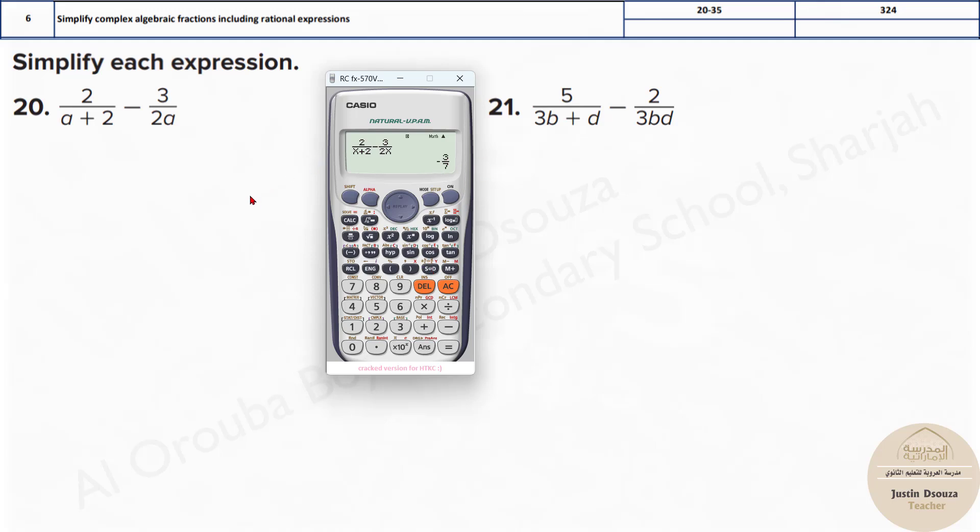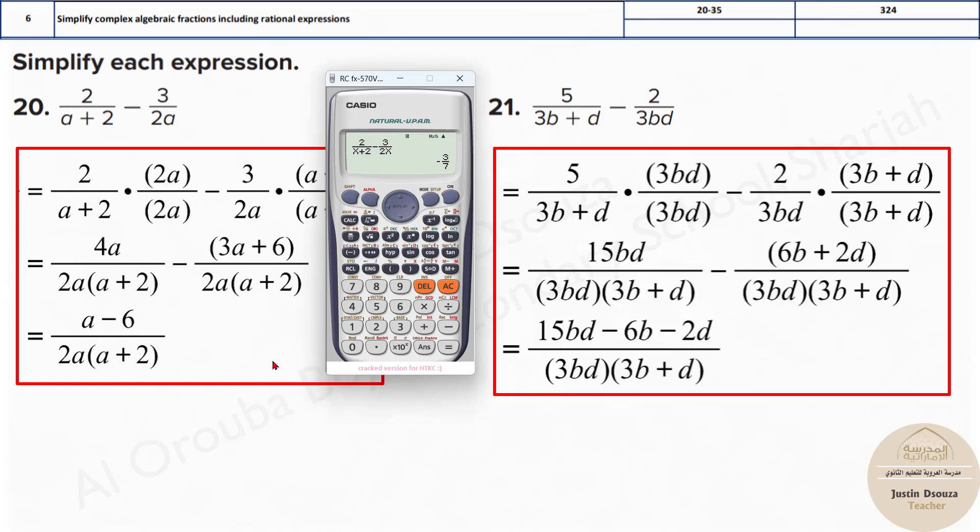Now, look into the options. You will have four options. Look into all the four options and try to substitute the same A value, X value, which we consider. That is 1.5 over here and solve it up.